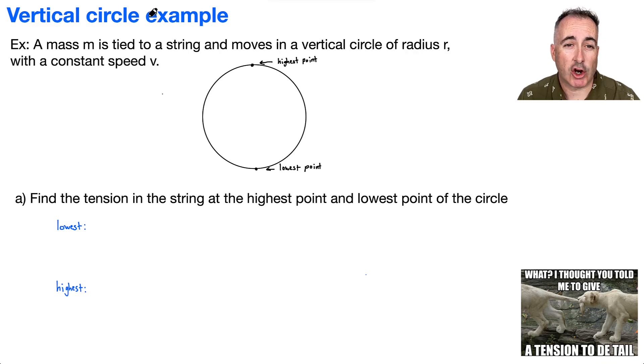Let's look at an example of a vertical circle like this. We're going to have tension here, so what? I thought you told me to give tension to detail, attention to detail. All right, so if we look at this, we've got a mass m, and it's tied to a string and moves in a vertical circle. We've got gravity acting downwards here on this thing.